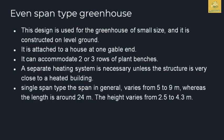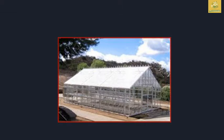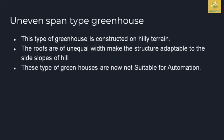Next is the even-span type of greenhouse. This is a small-size design. Looking at the house, one end has a gable. Comparing it to the lean-to type, this greenhouse has two to three rows. Looking at the heating system and the building, the single span type has a height of 5 to 9 meters and a length of up to 24 meters, with a height of 2.5 to 4.3 meters.